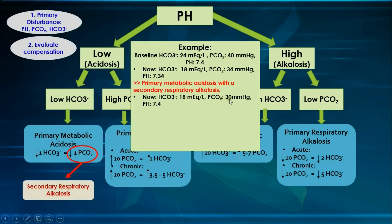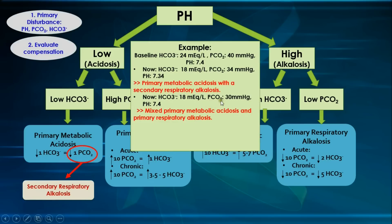In a second example, if bicarbonate is 18 but pCO2 is 30 — below the expected compensation level — and pH is 7.4 (normal), the diagnosis is a mixed primary metabolic acidosis and primary respiratory alkalosis. The pCO2 dropped more than expected, indicating the lungs are hyperventilating independently of the acidosis. A normal pH is typical in mixed disorders, because with compensation alone, pH usually only reaches near-normal, as seen in the previous example where pH was 7.34, not 7.4. This picture is classically seen in phase 3 of salicylate poisoning.